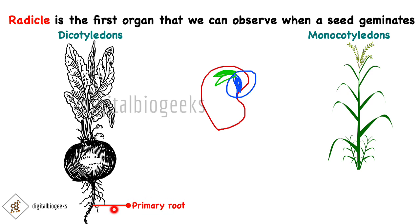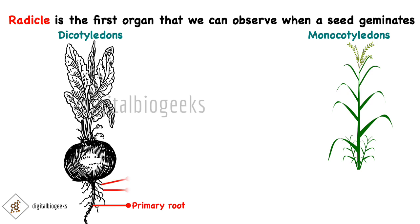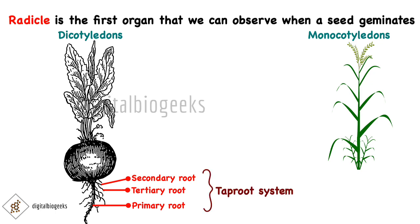This is the primary root, which is the radicle — the central one. It elongates into the soil in the case of dicotyledons. From the primary root, secondary roots arise, and from secondary roots, tertiary roots arise. This primary, secondary, and tertiary root system together is known as the tap root system. We can observe this in mustard plants, which is a dicotyledon.